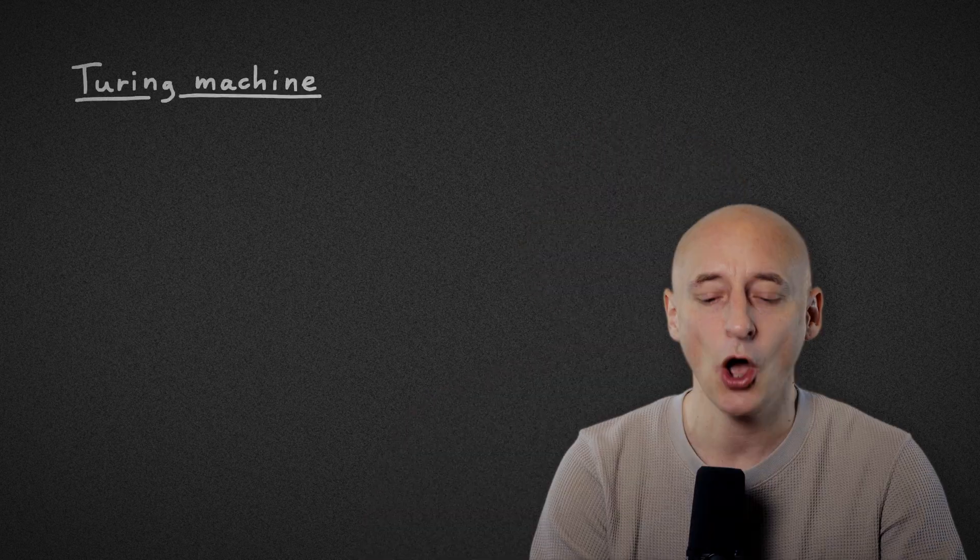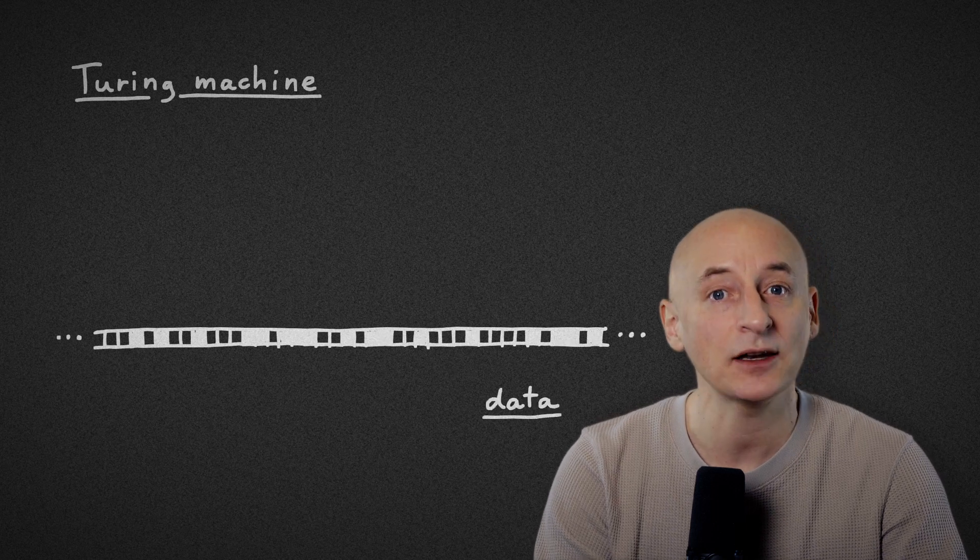In 1936, Alan Turing described a theoretical model of a computing machine. This so-called Turing machine contains two things – one,